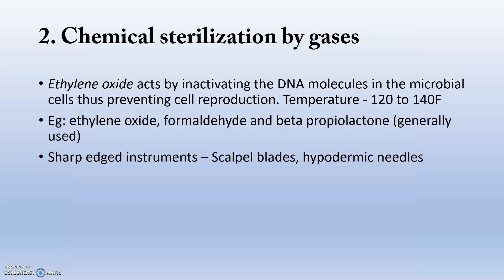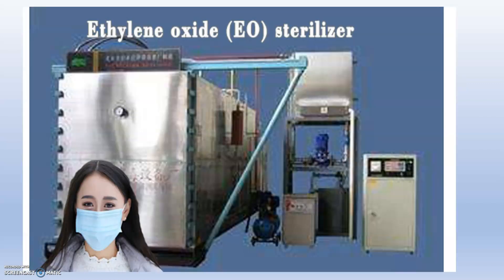Next is chemical sterilization by gases, mainly using ethylene oxide. It completely inactivates the DNA molecules so further reproduction of the bacterial cell is lost. It attacks the enzymes that have a role in reproduction, binding and breaking those enzymes so they won't contribute to further cellular reproduction. Mainly sharp-edged instruments such as scalpel blades and hypodermic needles are chemically sterilized. The ethylene oxide sterilizer is mainly used in hospital labs to sterilize needles and scalpel blades.